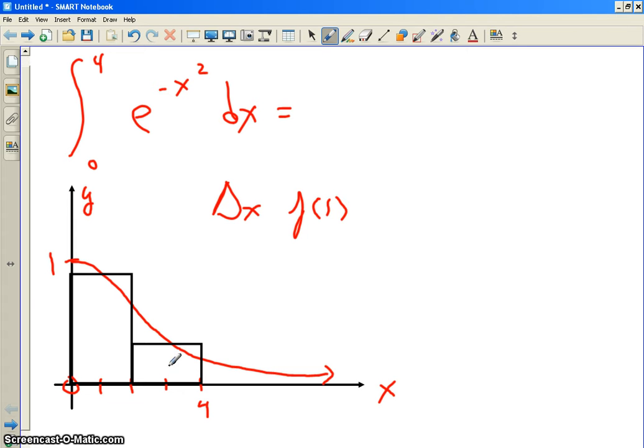F of 3, actually, right? The height here, f of 3. This is 2, so f of 3. And remember what we did before? There's a delta x times the height and a delta x times the height. Why don't we just factor out the delta x? So in this example, that's your midsum.